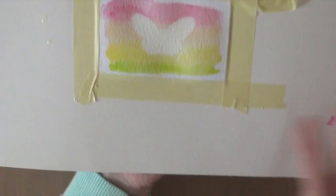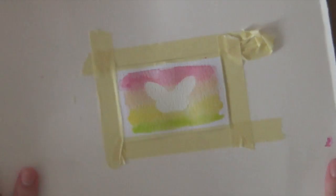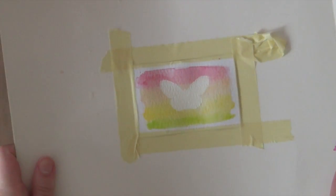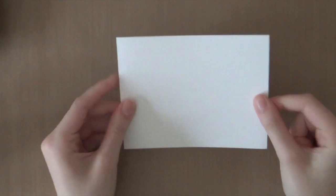I'm not going to heat set it using the heat gun. So I'm just going to set this aside so it can dry a little bit. And in the meantime I can start working on the rest of the card. So over here I have a standard A2 card. And I cut it out of some white cardstock by Simon Says Stamp.